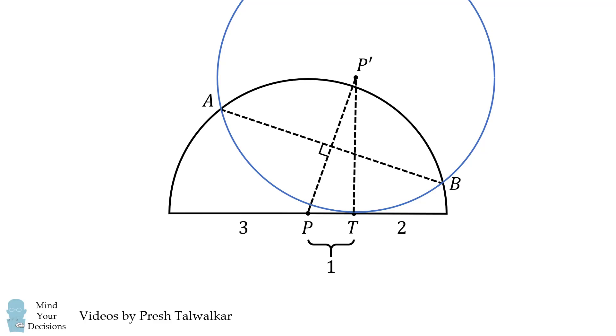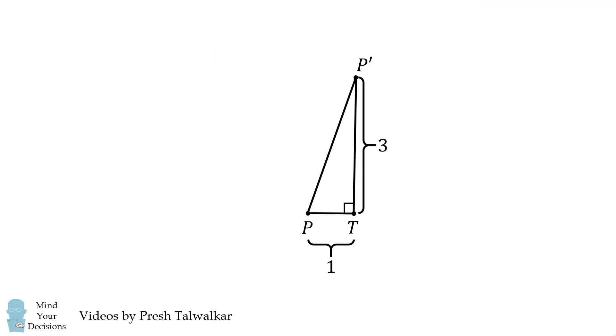If we construct P prime, it will be perpendicular to this diameter and it will have a length equal to 3. We can therefore focus on just this right triangle. We can calculate the length of the hypotenuse using the Pythagorean theorem and we get the distance between the two centers is equal to the square root of 10.